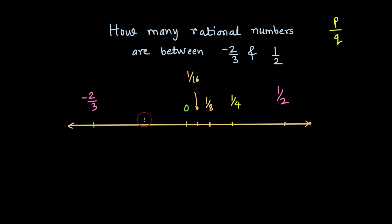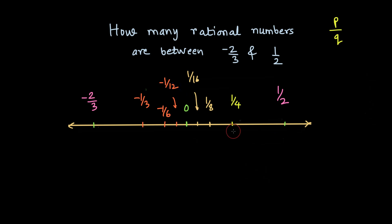Going left from 0 toward -2/3, I can find -1/3, which is halfway between 0 and -2/3. Between -1/3 and 0, dividing the distance by 2 gives -1/6, and continuing gives -1/12. Just by dividing by 2 I keep getting new rational numbers between -2/3 and 1/2 — but can I find a systematic method to determine exactly how many rational numbers lie between two rational numbers?